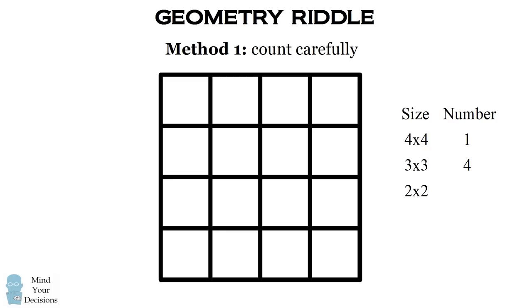How many 2 by 2 squares are there? In a given row we can place 3 2 by 2 squares. And there are 3 different rows that we can create squares. So there will be 3 times 3, which is 9 2 by 2 squares.